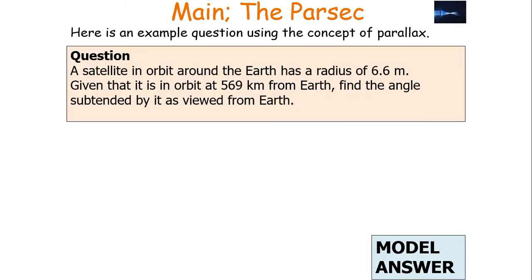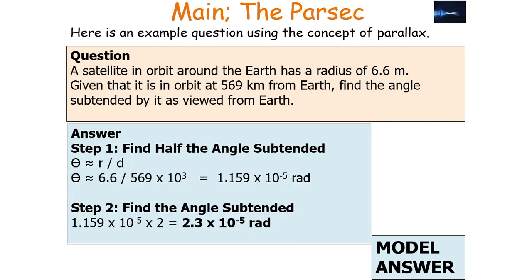Let's have a look at an example question which uses the concept of parallax. A star in orbit around the Earth has a radius of 6.6 metres, given that it's in orbit 569 kilometres from the Earth, finding the angle subtended by it as it's viewed from the Earth. You use the equation to find half the angle subtended: theta is approximately equal to R over D. Remember, we can drop the tan theta aspect because we're using the small angle approximation. You then convert your kilometres into metres to get an angle of 1.159 times 10 to the minus 5 radians. To find the total angle subtended you then double it, because you've just found half the angle subtended.